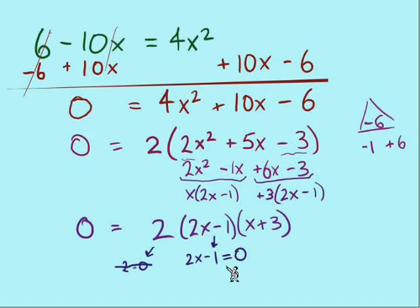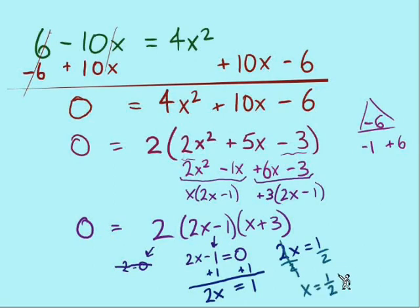2x minus 1 equals 0. Linear equation we're trying to solve. So, I think let's add one to each side. Takes us to 2x equals 1. And then, finish solving for x. Divide both sides by 2. x equals 1 half. Our first solution.